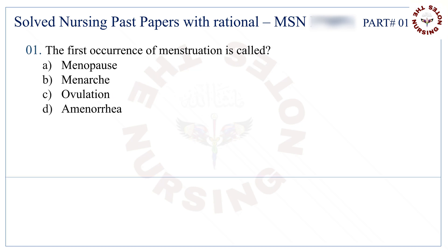Question number 1: The first occurrence of menstruation is called. The correct answer is B — menarche.